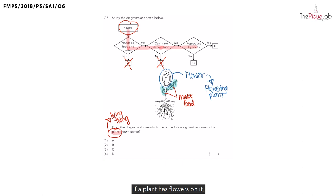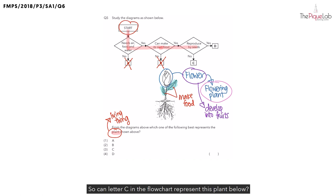I would like you to recall. If a plant has flowers on it, what can these flowers develop into after some time? The flowers would be able to develop into fruits. And if you cut open these fruits, what do you see in these fruits? There are seeds in the fruits. And if there are seeds, what does this tell you about how flowering plants reproduce? This shows that flowering plants reproduce by seeds. So can letter C in the flowchart represent this plant below? The answer is no.